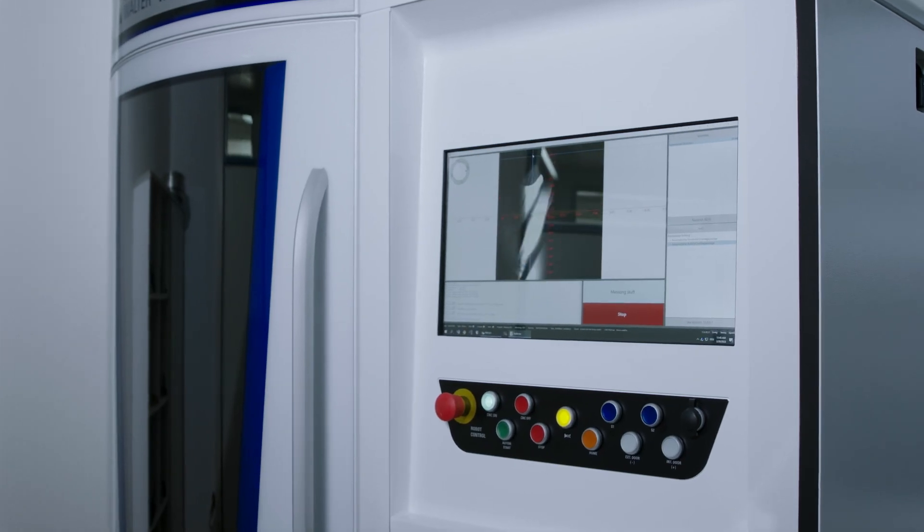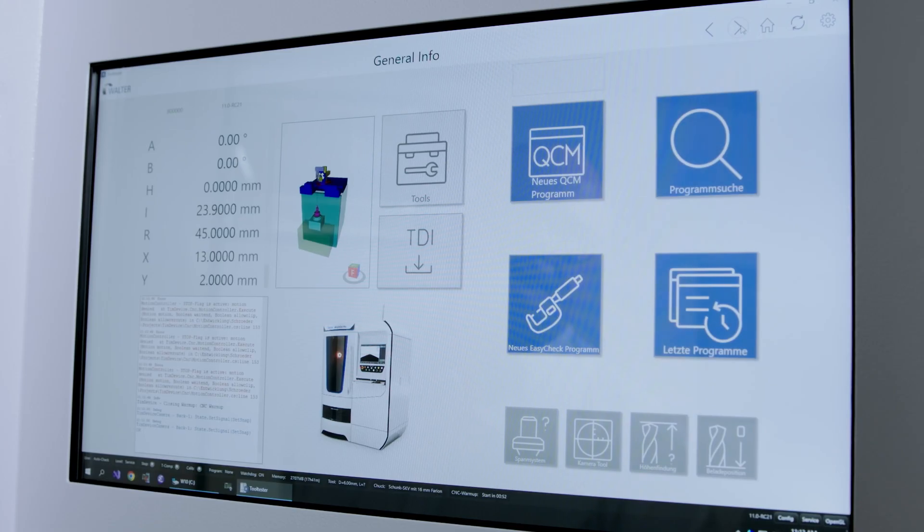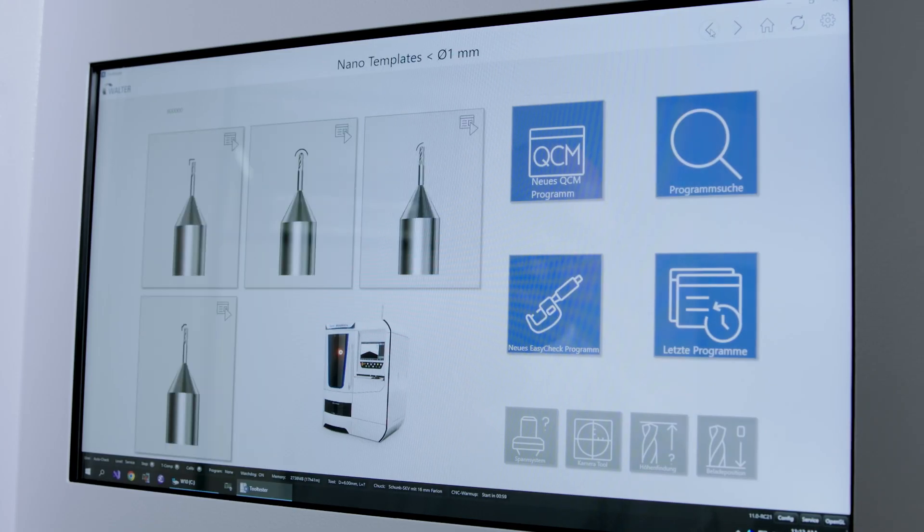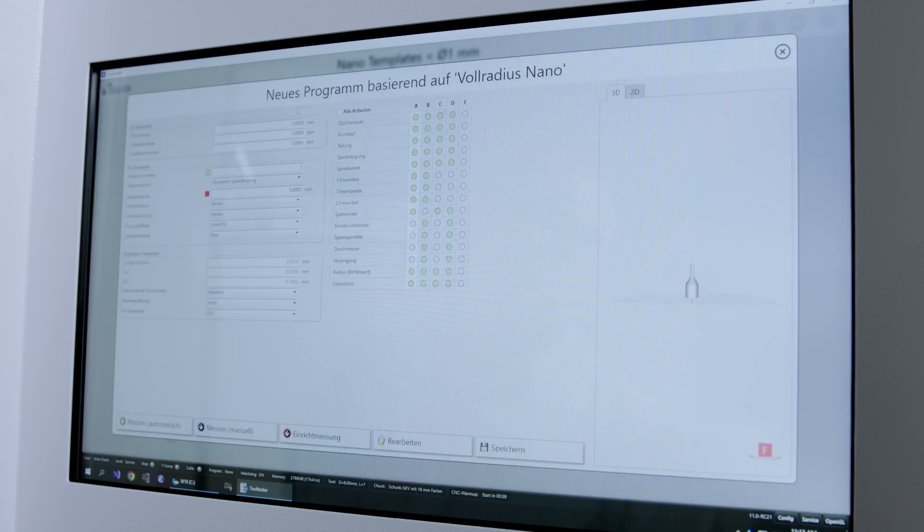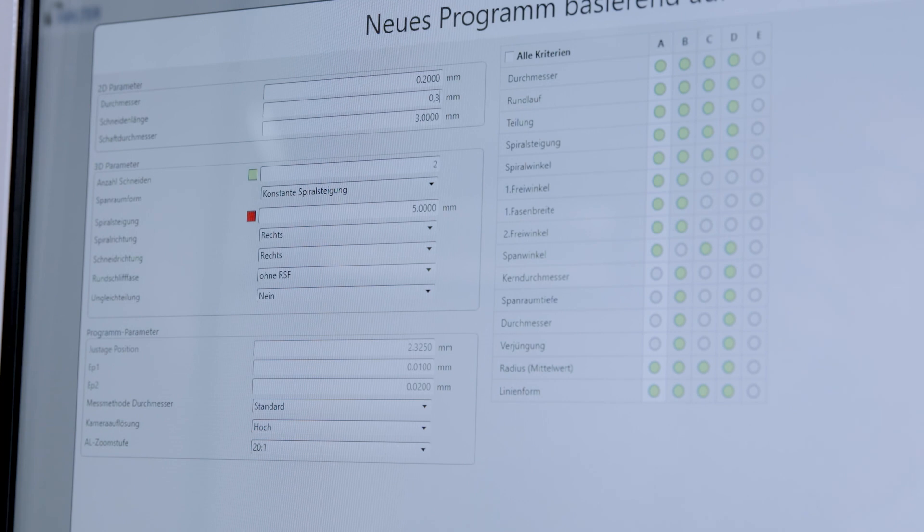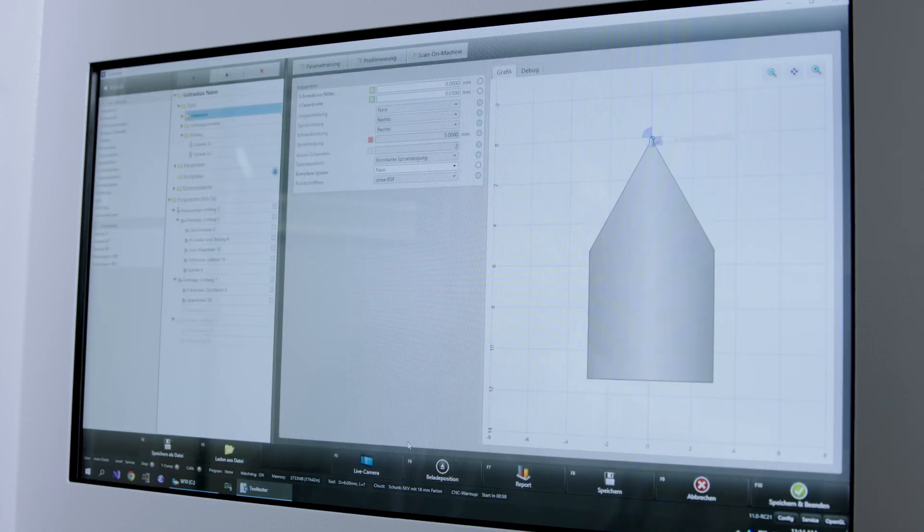The operation of the Helichek Nano is similar to the operation of other measuring machines in our portfolio. This has the benefit that employees of clients who already work with one of our Helichek machines require almost no additional training. The reason for that is that we are able to integrate the highly complex requirements into our software in such a way that the operation is also based on the template technology. Likewise, the achievable accuracies or measurement uncertainties are comparable to the other Helichek measuring machines in the Walter portfolio.